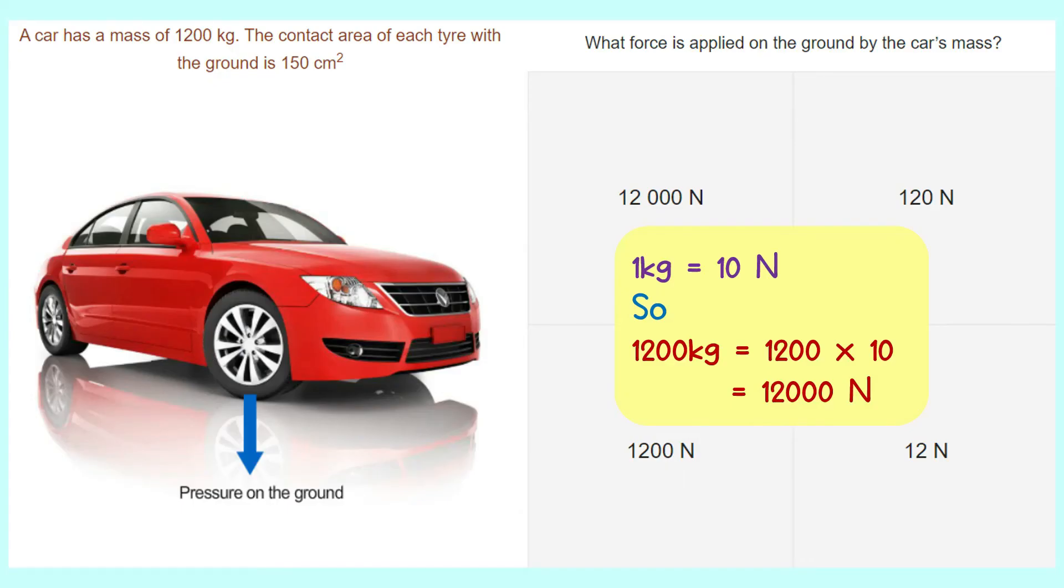Let's see the second question. A car has a mass of 1,200 kilograms. The contact area of each tire with the ground is 150 centimeters square. What force is applied on the ground by the car mass?